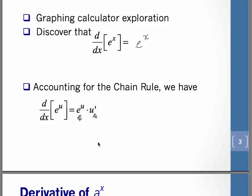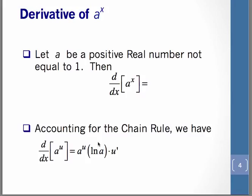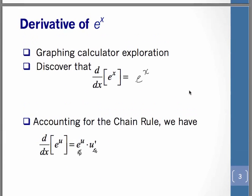So next, let's address the derivative of a to the x. We're going to assume that a is a positive real number, not equal to 1. Obviously, because if we had 1 to the x, that's simply going to be 1. The derivative rule is that it's a to the x multiplied by the natural log of a. Now, if you think about this rule and then apply it to e to the x, because e is a positive real number — if you apply that a to the x rule, remember what we would have is e to the x, but then you're multiplying by natural log of e, which we just know to equal 1 anyway. So the rule does actually bear out.